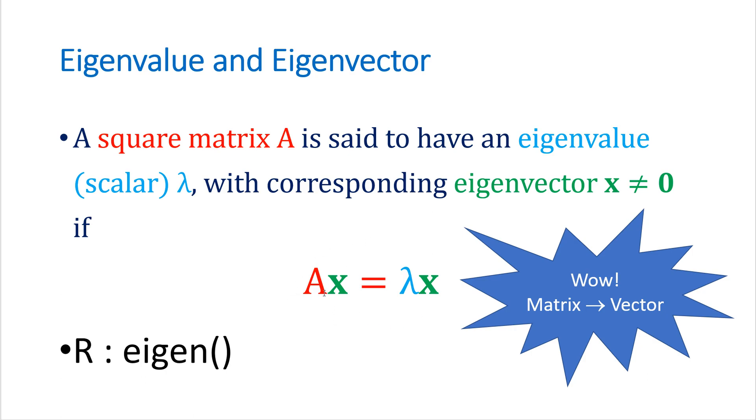So A matrix, if you multiply by this one, eigenvectors, then it becomes lambda times x vector. So from matrix to vector.